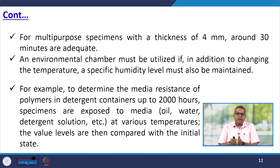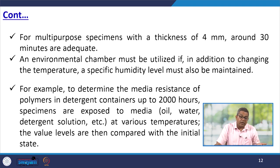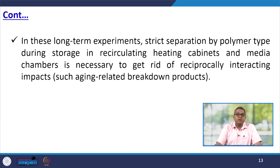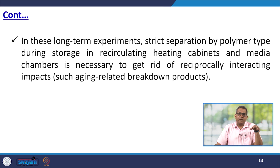The value levels are then compared with the initial state, and by this way you can also find out the degradation. Because of the variety of atmospheres, specimens may be exposed to conditions ranging from 2 degrees Celsius to 47 or 48 degrees Celsius. In these long-term experiments, strict separation of polymer type during storage in recirculating heating cabinets and media chambers is quite essential to avoid reciprocally interacting impacts like aging-related breakdown products.